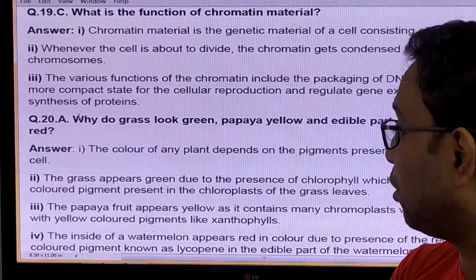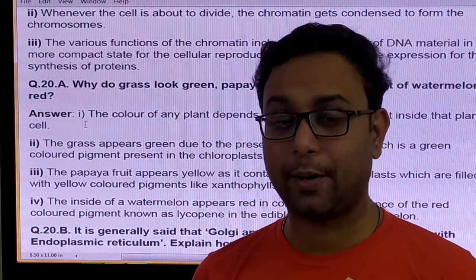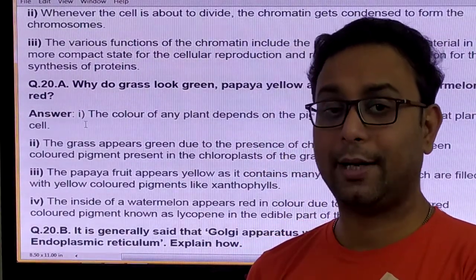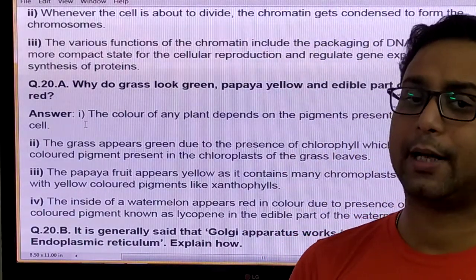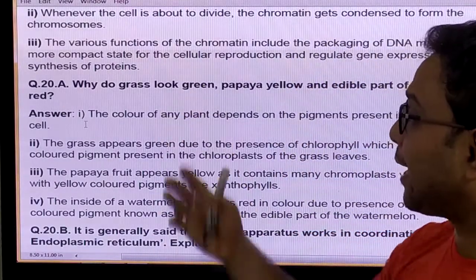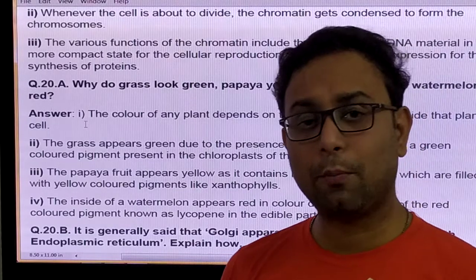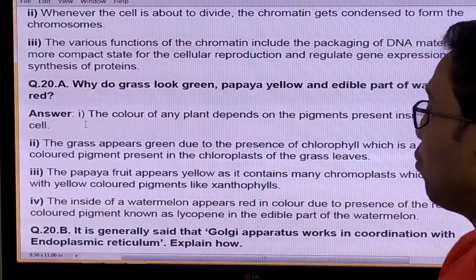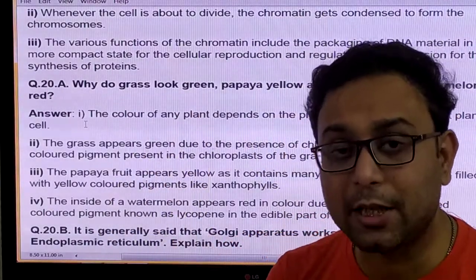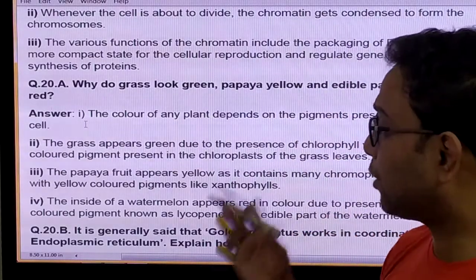Plastids are very important. There are three types. When they are colorful, they are called chromoplast. When they are colorless, they are called leucoplast. When they are green in color, they are called chloroplast. Grass looks green because it has chloroplast. Papaya is yellow because it has chromoplast. Watermelon is red because of pigments of chromoplast, which contain a special type of pigment called carotenoids. Carotenoids are of two types: carotene and xanthophyll.